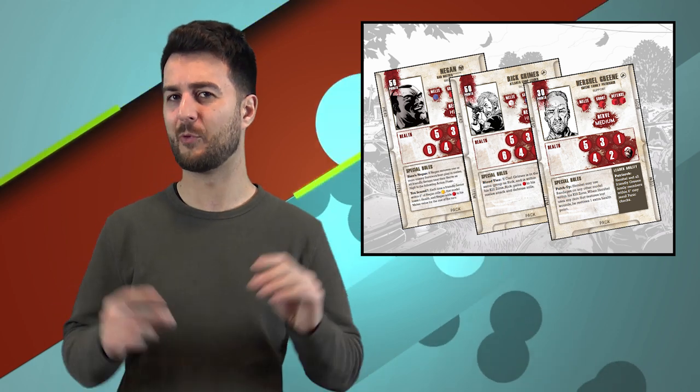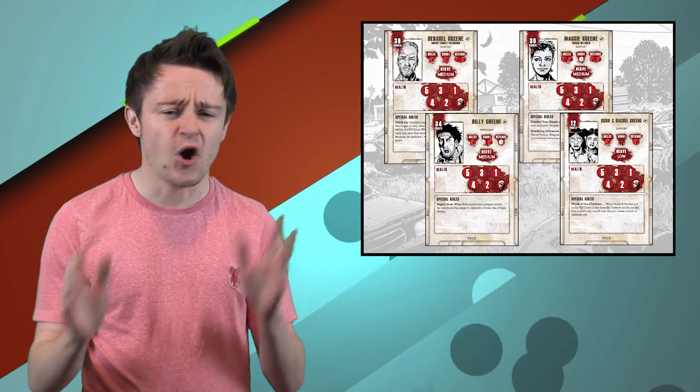Each player has control of a crew. Hi, my name is Ian and for this campaign I've got to go with the Green family - they're my absolute favorites. I've got Herschel to make sure everyone survives, his children, Billy, Maggie, Susan, and Rachel Green. We're going to give everyone nice big buffs and take down the saviors.